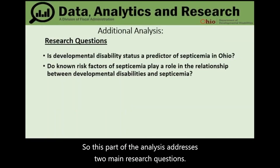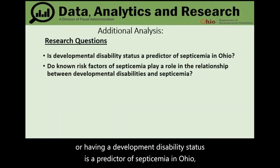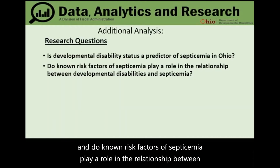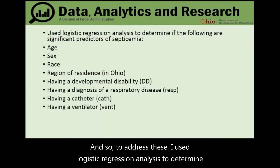This part of the analysis addresses two main research questions: whether having a developmental disability status is a predictor of septicemia in Ohio, and whether known risk factors of septicemia play a role in the relationship between developmental disabilities and septicemia. To address these, logistic regression analysis was used.